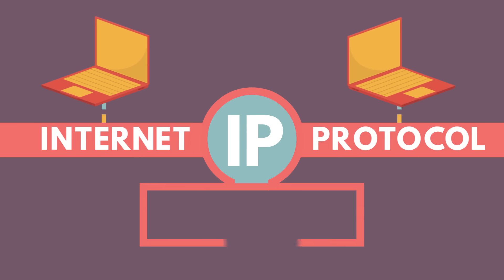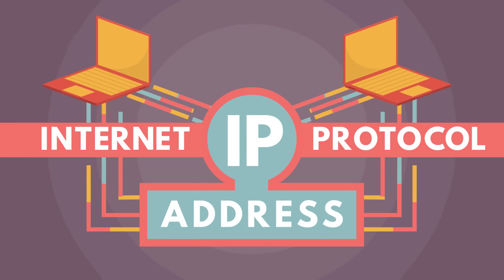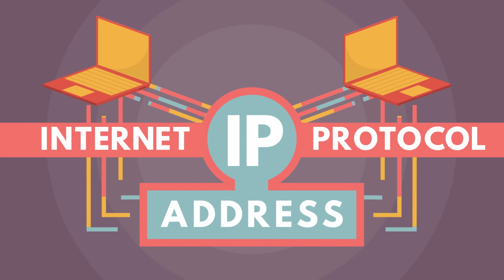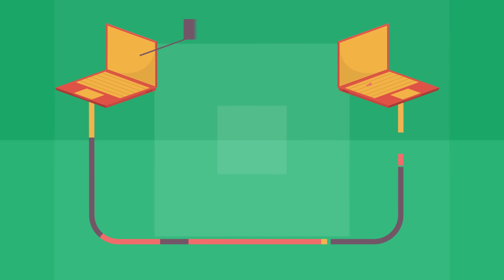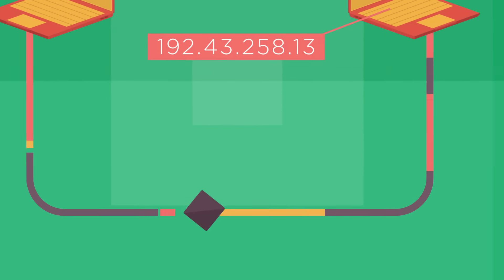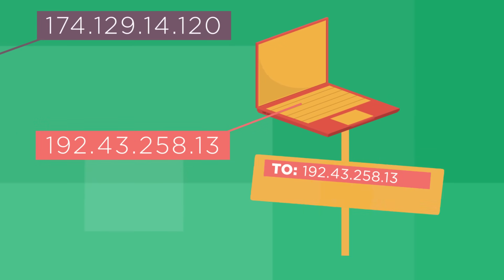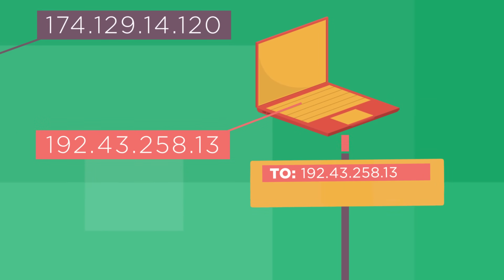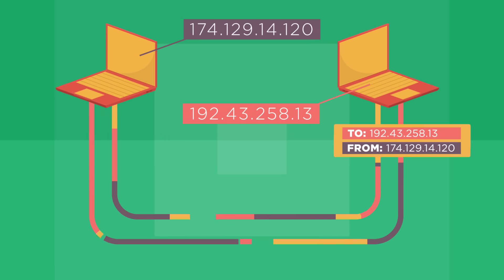This protocol is simply called the internet protocol, or IP. A computer's address is called its IP address. Visiting a website is really just your computer asking another computer for information. Your computer sends a message to the other computer's IP address, and it also sends along its origin address, so the other computer knows where to send its response.